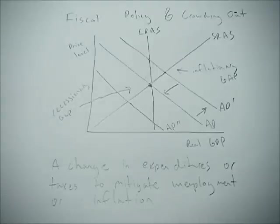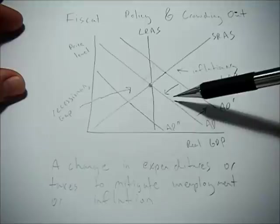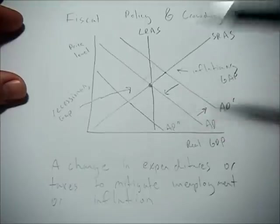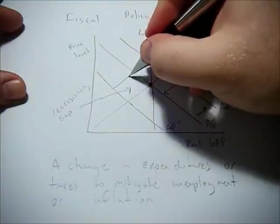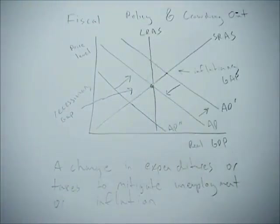So what the government can do in this situation through fiscal policy is increase expenditures or decrease taxes to get us back to that long run equilibrium.